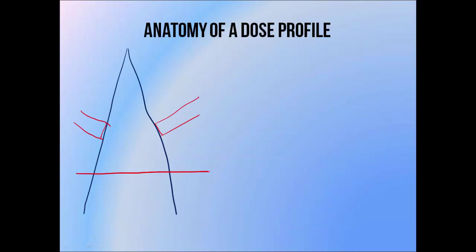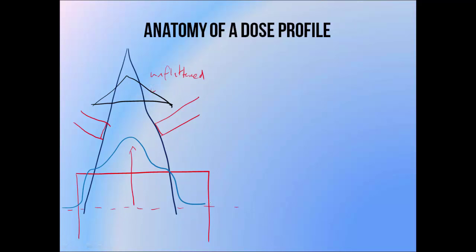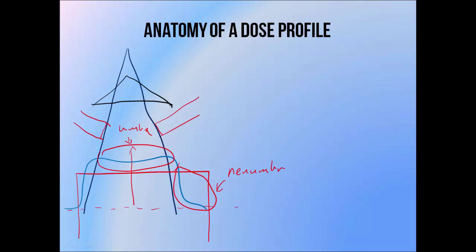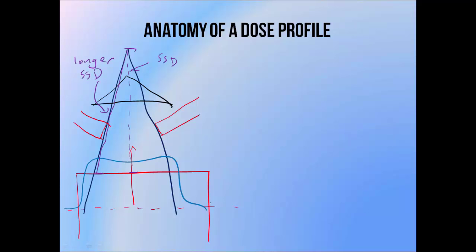Dose profiles of unflattened beams tend to have a big peak in the middle, which is why we need a flattening filter to produce a uniform beam. When a flattening filter is used, a beam normally has a flattish section in the middle called the umbra, and regions either side in which the dose drops rapidly, called the beam penumbra. A megavoltage beam profile is never perfectly uniform, and the degree of uniformity tends to change with depth. That's partly because the beam is diverging, so the source to surface distance tends to vary with distance along the profile, being greatest at the edges and smallest right in the centre. Beam divergence also means that portions of the beam near the edges have to travel through a greater thickness of material in order to reach the depth at which we're measuring the profile, which combined with a longer SSD can lead to lower dose near the edges.